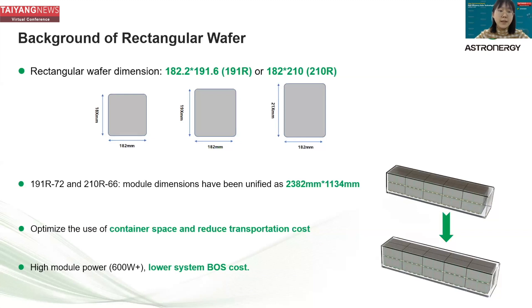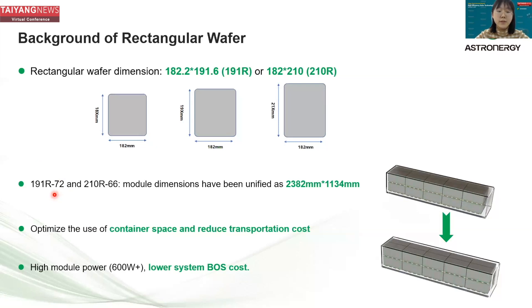By thinking outside of the box when it comes to wafer shape, rectangular wafer provides a very good breaking point. The dominant rectangular wafer dimensions include 182.2×191.6 and 182×210, and we will refer to them as 191 rectangular and 210 rectangular respectively. The dominant manufacturers have their own rectangular wafer models.